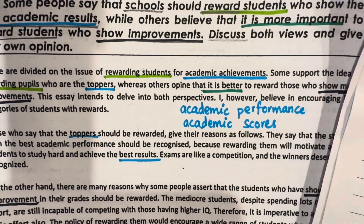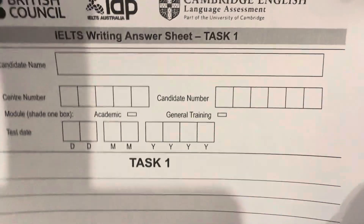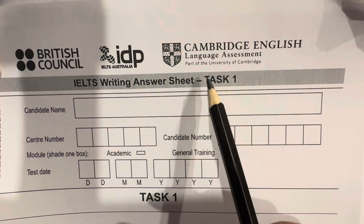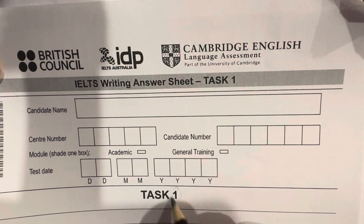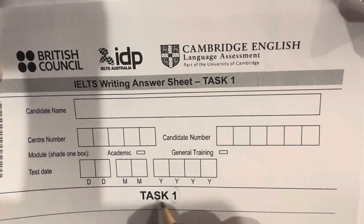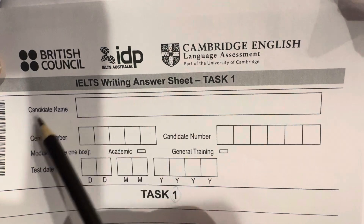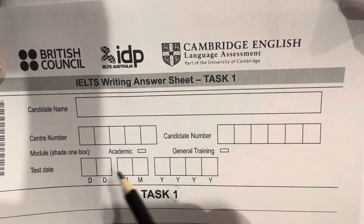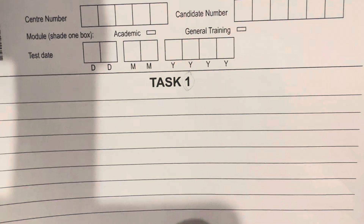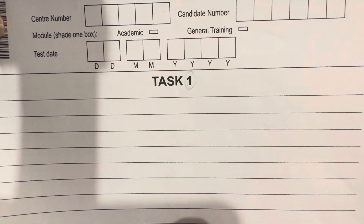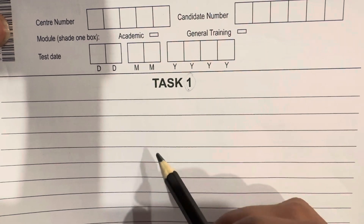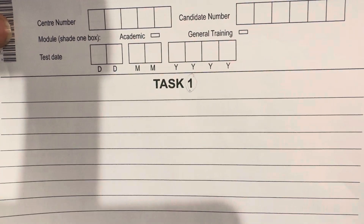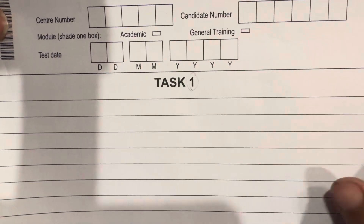Now, look at the answer sheet. This is for task 1 and task 2. You have to fill in candidate name, center number, and explain how many words are used. You have to do the same things for both tasks.